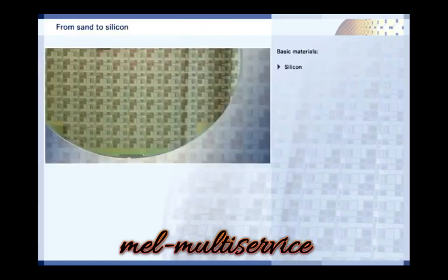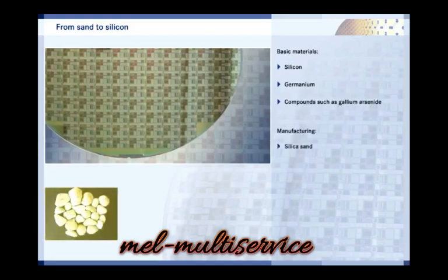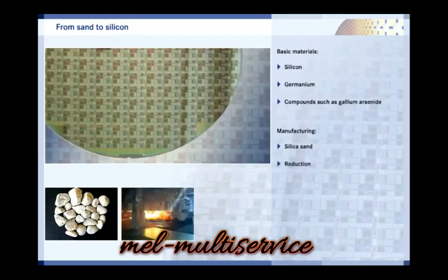Semiconductor components mainly consist of the chemical element silicon. Germanium was often used in the past but is now only used in special applications. Occasionally semiconductor components are made of chemical compounds such as gallium arsenide. Silicon is one of the most common elements on earth. The raw material for making semiconductors is silica sand or quartz gravel. The silica is converted to silicon in an electric arc furnace.